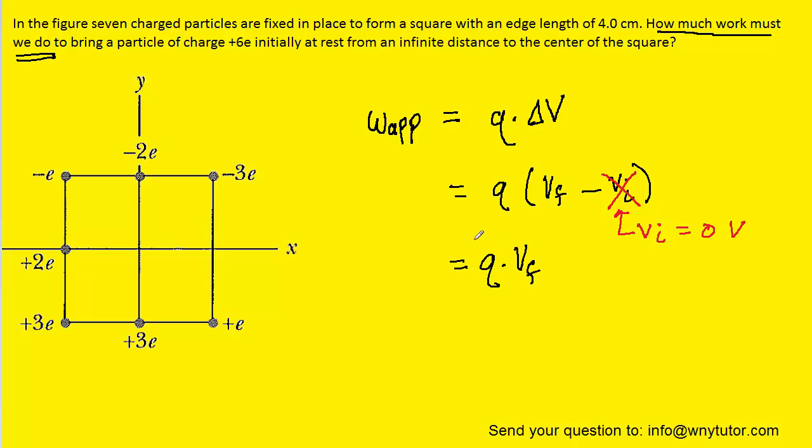Now we already know the charge of this particle. It's positive 6e. What we need to figure out is the final potential. Now again, we're moving the charge to the center of the square, so the final potential would be the potential right here at the center. And that becomes our task is to find this potential right here.